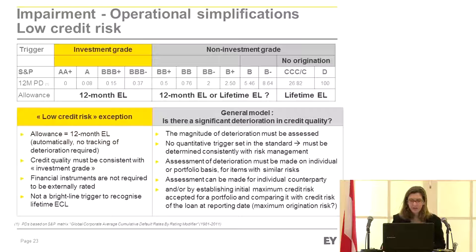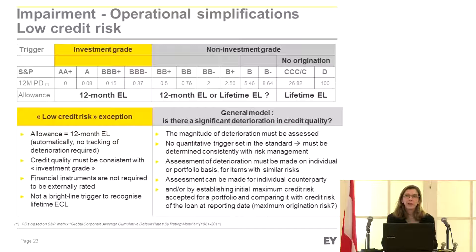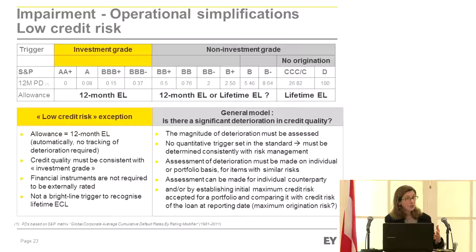There is no quantitative trigger in the standard — it doesn't say, for example, when your EL goes from 1% to 2% that constitutes significant deterioration. Banks will have to define their own criteria. Although the model is meant to be relative — comparing original credit quality to current quality — banks are trying to design simpler homogeneous thresholds for portfolios. This works only if the credit quality in the portfolio is fairly homogenous at origination; otherwise you can't use the same cut for all exposures.